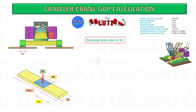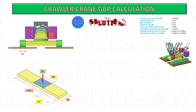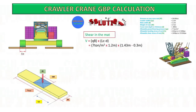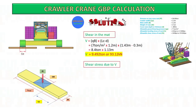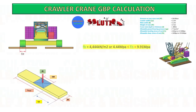Bending stress due to moment on mat: to get this, the moment value is divided by width of mats and multiplied by thickness of mats to the power of 3, then divided by 6 — this is the inertia of the mat. This calculation is applicable for wooden type crane mats. Shear stress due to V: 1.5 times V divided by width of mat multiplied by thickness. Since bending moment and shear stress are less than the allowable values, the crane mats are able to distribute the pressure on the ground.